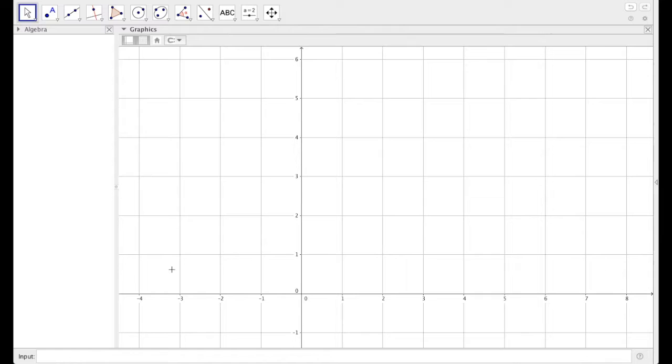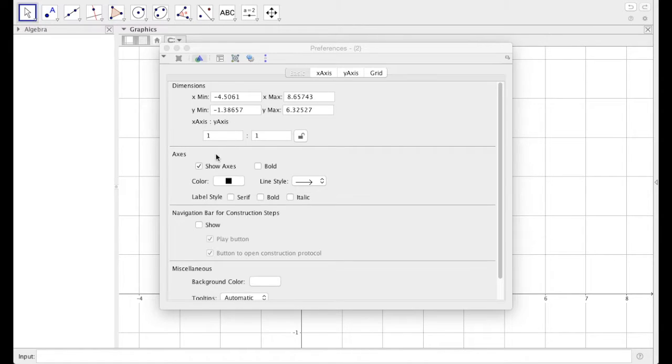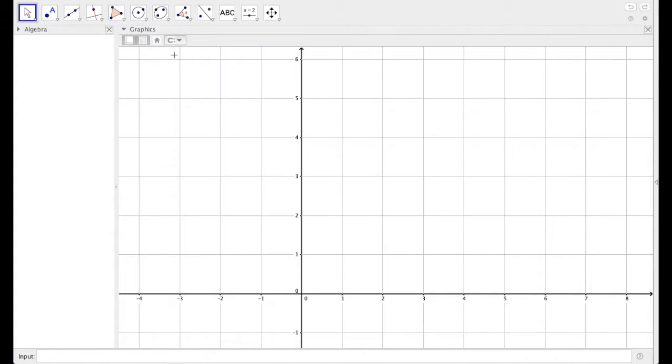I zoomed my graph in from negative 4 to positive 8 on the x-axis, and negative 1 to 6 on the y-axis. Let's thicken up these axes a bit. Right-click anywhere and select Graphics. Under the Axes options, let's bold up the axes and bold up the label size. It's just a little bit easier for you to see them.